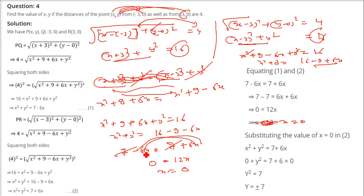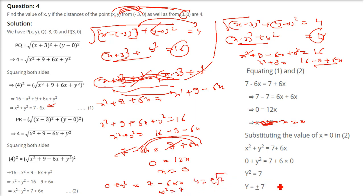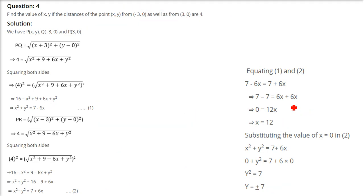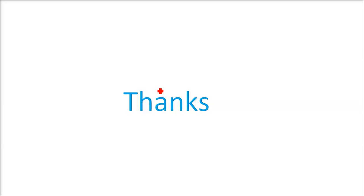Now substituting x equals 0 into the equation: 0 plus y squared equals 7 minus 6 times 0, so y squared equals 7, meaning y equals plus or minus root 7. So x is 0 and y is plus or minus root 7. This is all about this exercise. Thank you so much, take care of yourself.